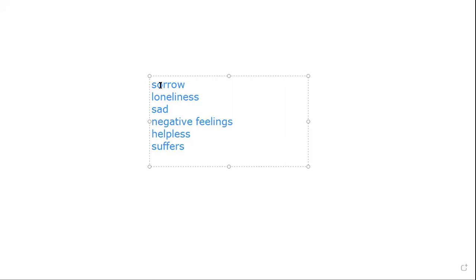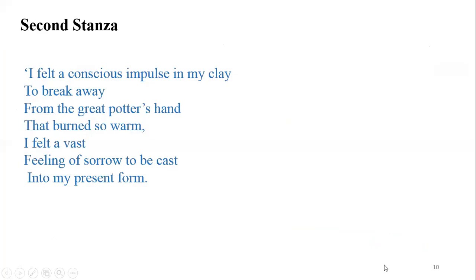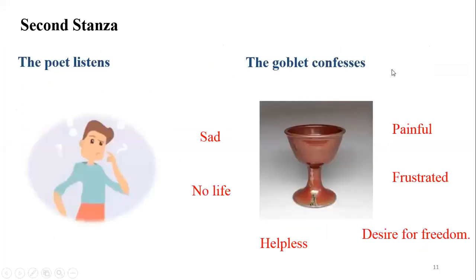Those are the feelings the goblet has. Now let's move into the third stanza. In the second stanza, before going to the third, we can see how the goblet confesses: he needs freedom, is painful, helpless, negative, with no life.